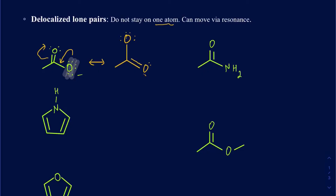Whenever you have a delocalized lone pair, it stays in the p orbital. When it stays in the p orbital, it doesn't really count in the hybridization. As a result, both of those oxygens are going to be sp2 — that's because one of the lone pairs is not counted in the hybridization, and that's because it's delocalized. So anytime you have a delocalized lone pair, it stays in the p orbital and you don't count it in the hybridization.